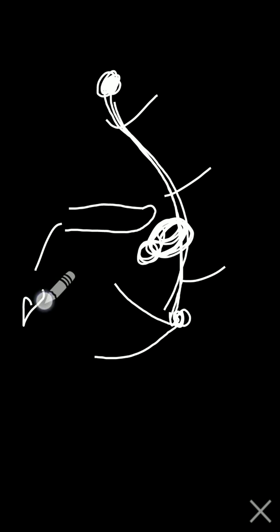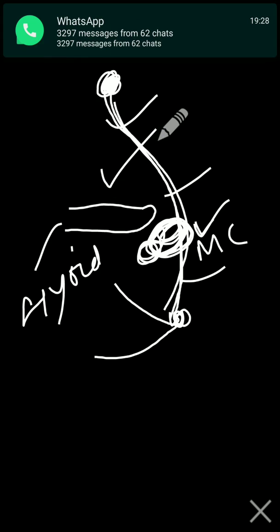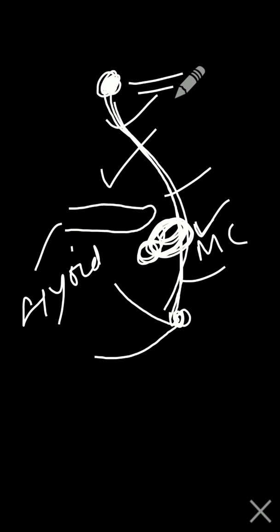The thyroglossal tract disappears, and only the epithelial tissue which remains may sometimes form cystic tissue within the tract. The swelling can occur anywhere along the tract, but the most common site is subhyoid. This is the hyoid bone, and the most common site of thyroglossal cyst is subhyoid.